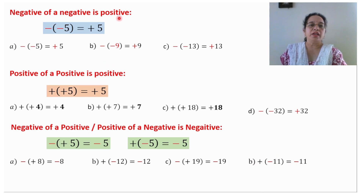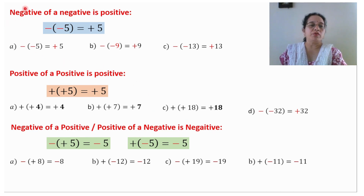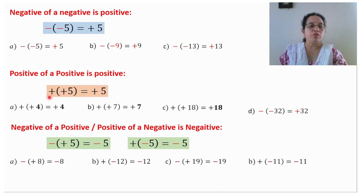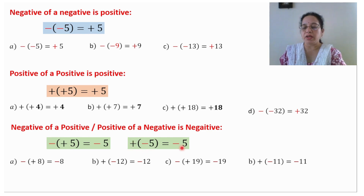Three very important sentences: negative of a negative is positive; positive of a positive is positive; negative of a positive or positive of a negative — your answer will be negative. Once again with the help of signs: if two minus signs are here, this will become positive. If both are positive, definitely the answer will be positive. If any one of them is negative, then your answer will be negative.